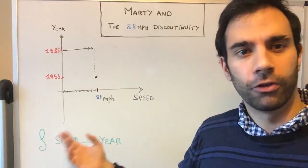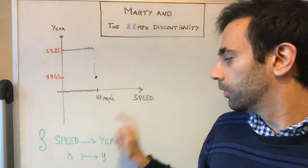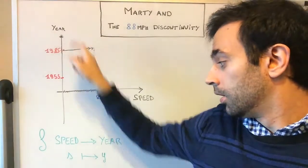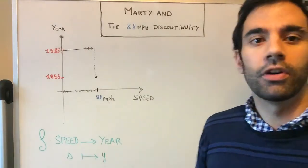If I define a function f going from speed domain to a year domain, I call s the variable for the speed and y the variable for the year.